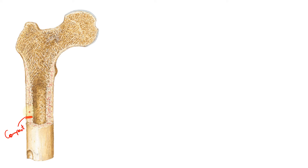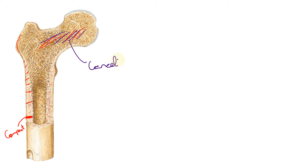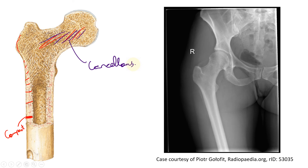If you look at this pattern from the diaphysis going towards the end of the bone — towards the epiphysis — you can see that the compact bone is decreasing in its thickness. It becomes a very thin shell of compact bone on the outside at the upper end of the femur. But in contrast, at the core, as you move toward the epiphysis, it is replaced by thin plates of bone, which are known as cancellous bone.